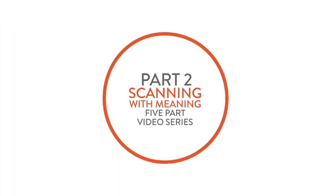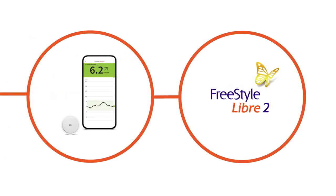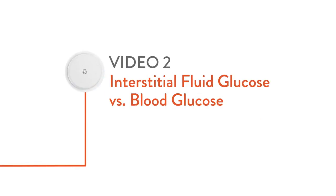Hi and welcome to part two of the scanning with meaning video series featuring the Freestyle Libre 2 system. The Freestyle Libre system is a sensor-based glucose monitoring system used worldwide. In this video we're going to talk about the difference between interstitial fluid glucose and blood glucose.